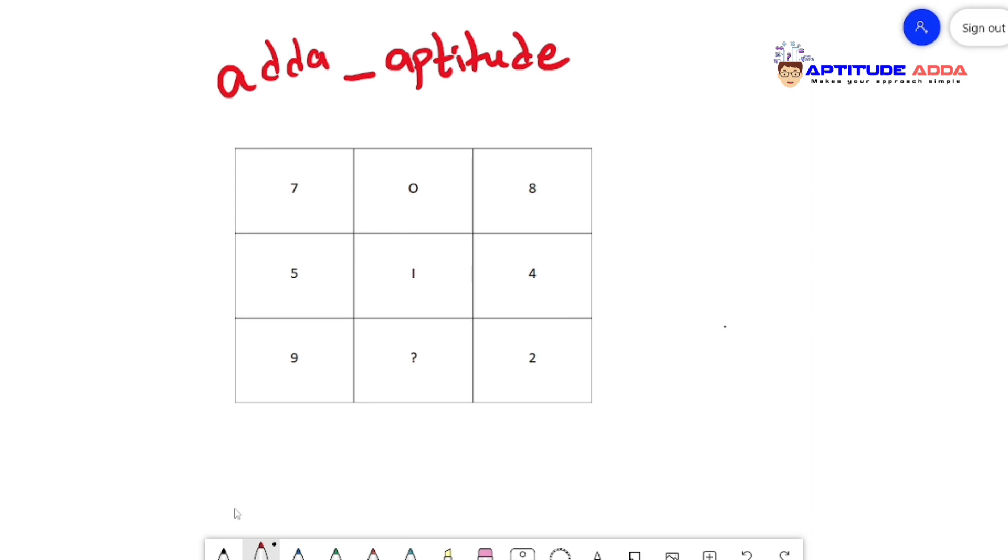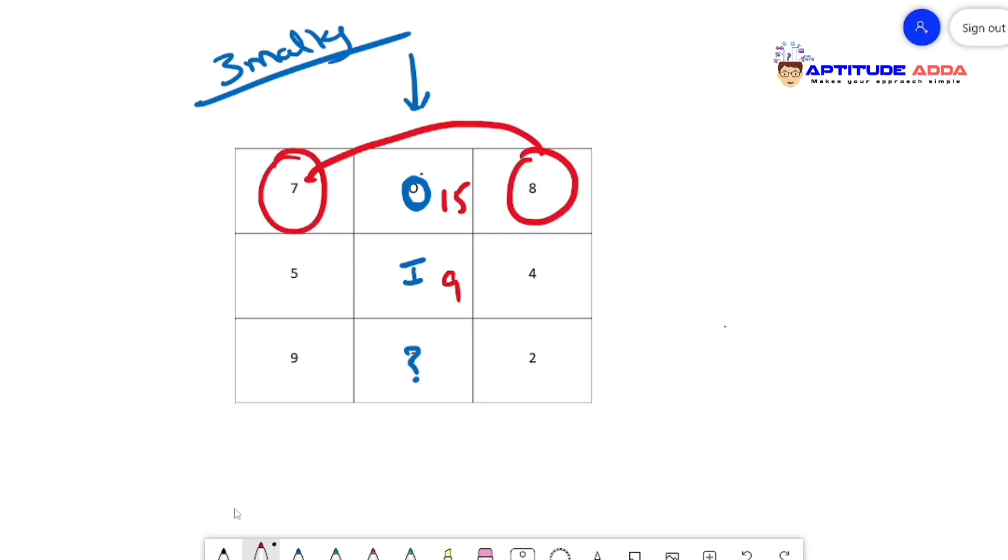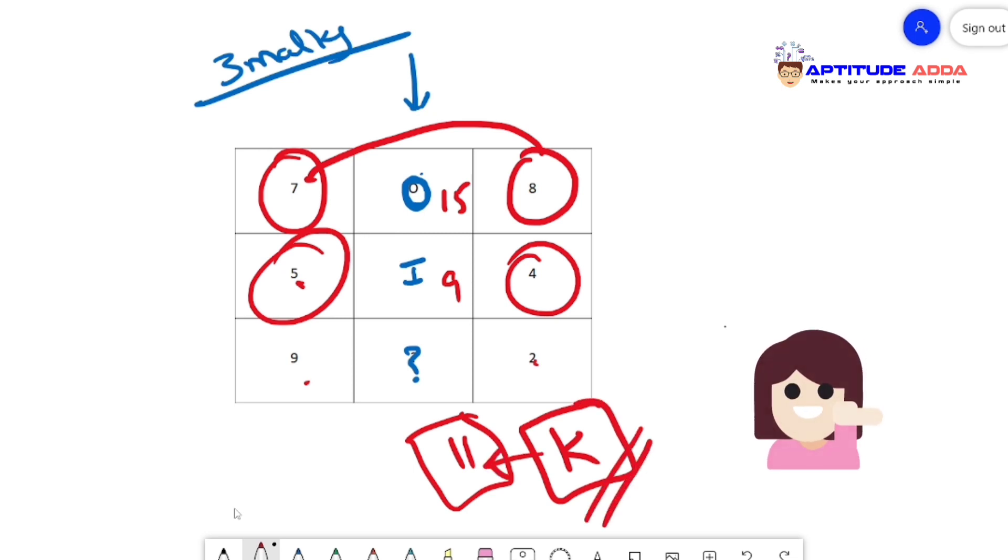In this particular problem, let's see where we have bigger numbers. We don't have any bigger number, but can you find the middle column? It has O and I. It's a three marks question. In the middle column you can find O, I, and question mark - these are alphabets. O stands for 15th position in the alphabetical series, I is 9th position. How do you get 15? 7 plus 8. Nine? 5 plus 4. Similarly, 9 plus 2 is 11, which is K. K stands for 11, so the answer is K.